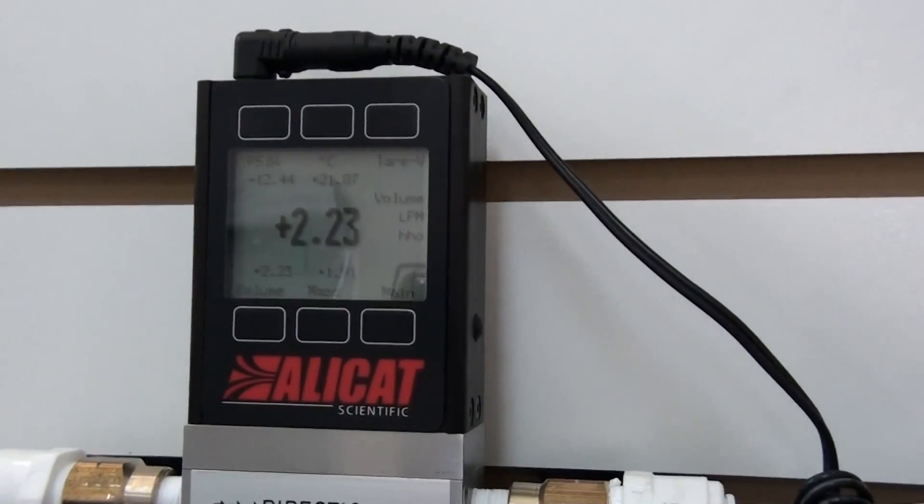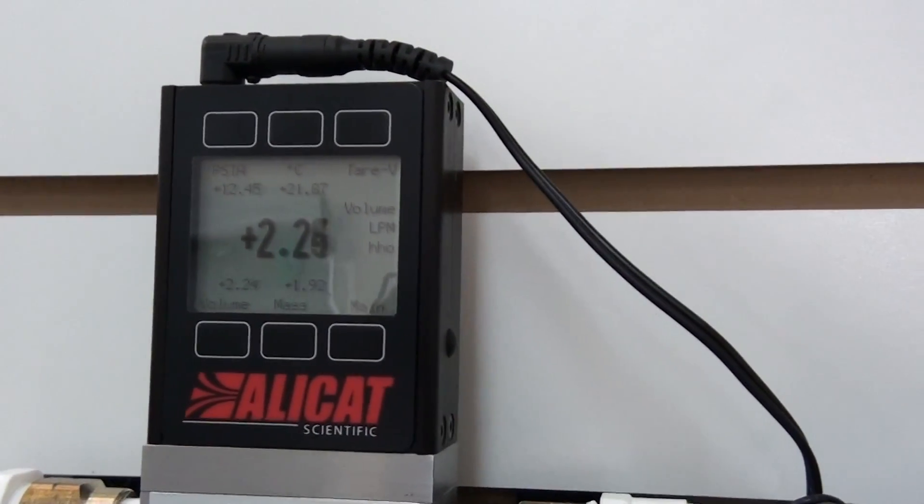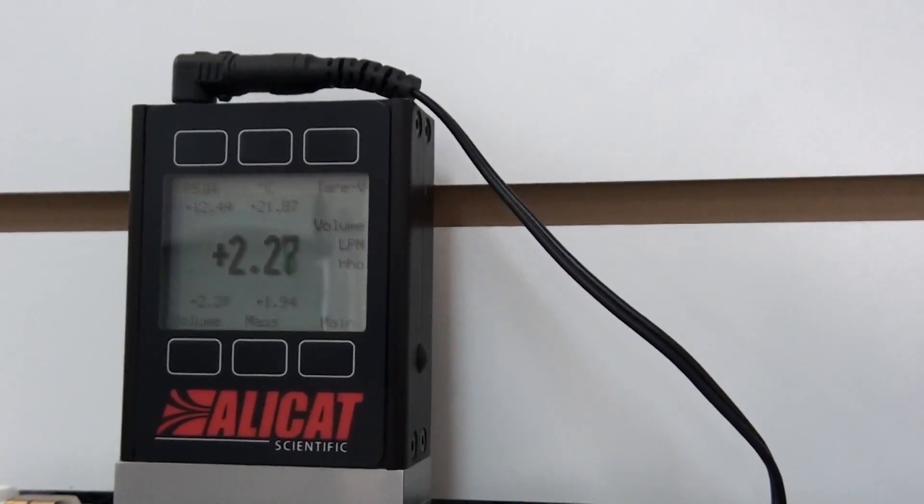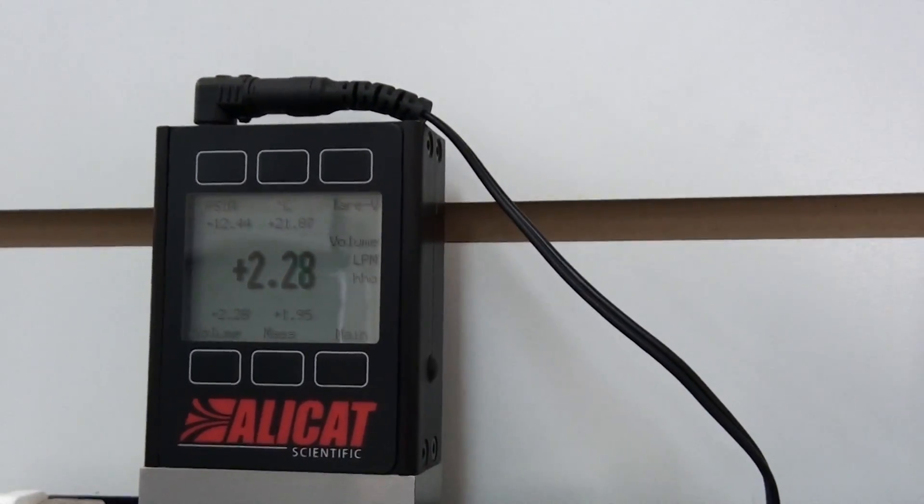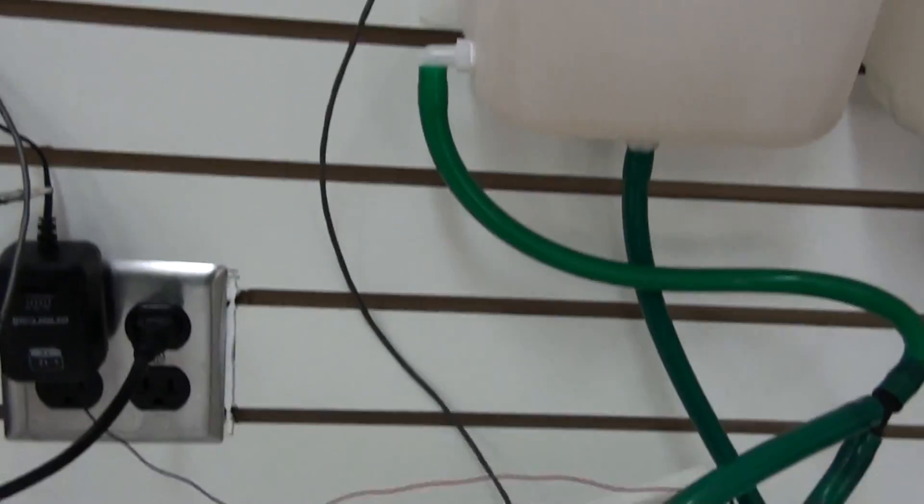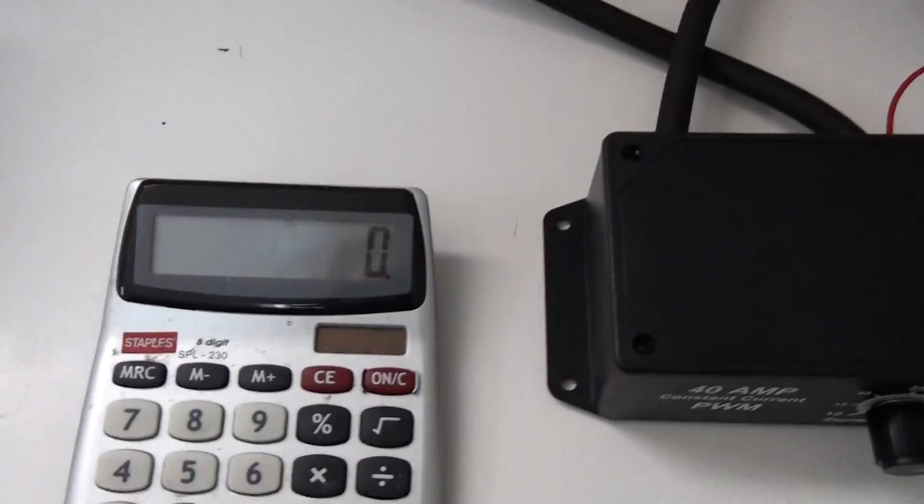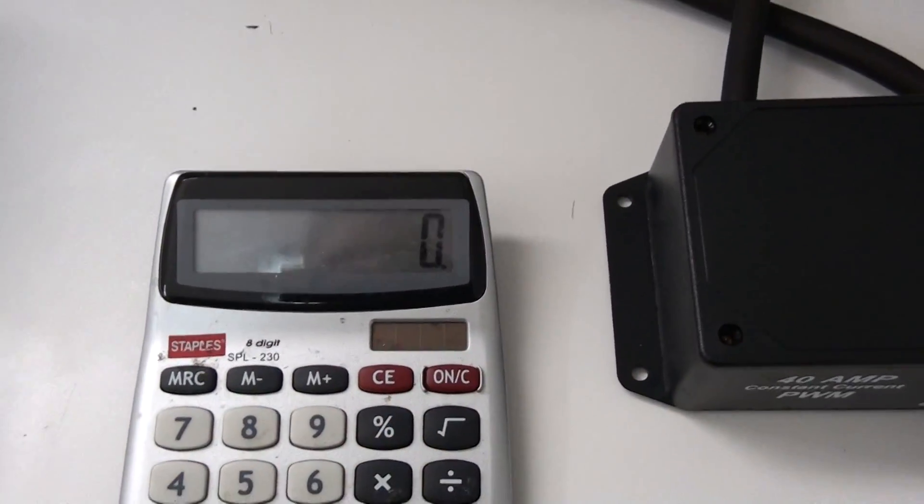So at 35 amps, the output of the cell is 2.25 liters per minute. We'll do a quick efficiency calculation for that.